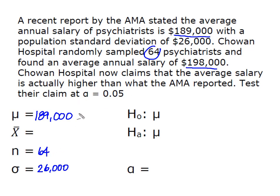Their average for that sample was $198,000 which is my value of X bar and I'm told that I'm going to test their claim at an alpha of 0.05.